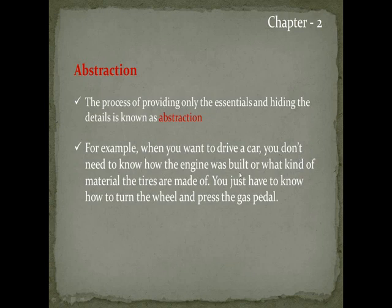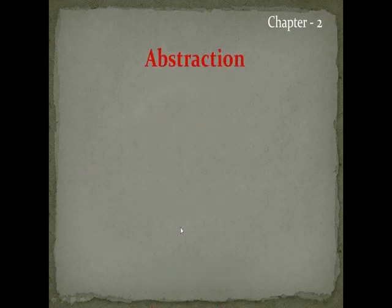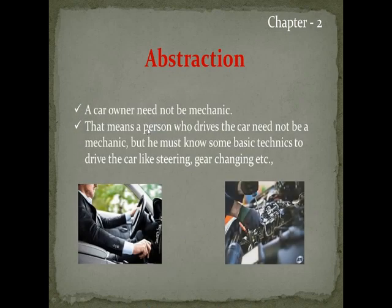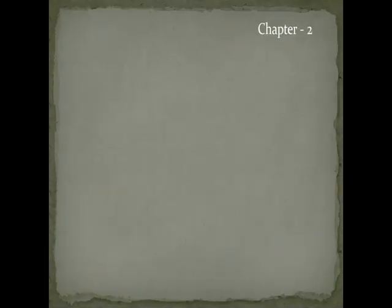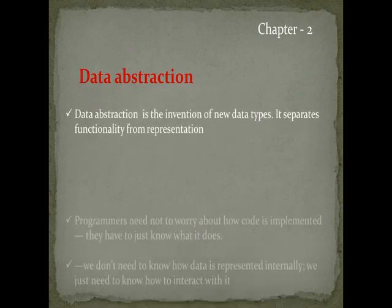For example, when you want to drive a car, you don't need to know how the engine was built or what kind of material the tires are made of. You just have to know how to turn the wheel and press the gas pedal. A car owner need not be a mechanic, but must know basic techniques like steering and gear changing. So abstraction is providing only the essentials and hiding the details.